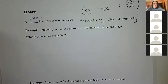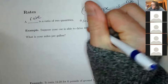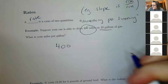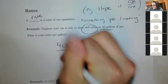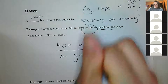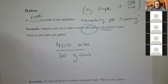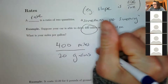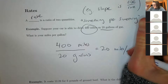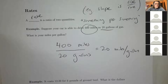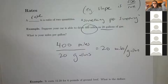How many miles per gallon do we get going 400 miles on 20 gallons? It's 400 miles over 20 gallons — 400 divided by 20 — you get 20 miles per gallon.